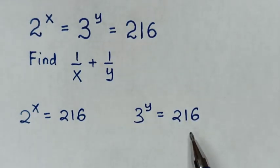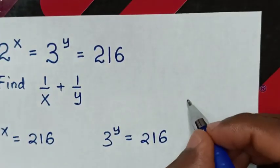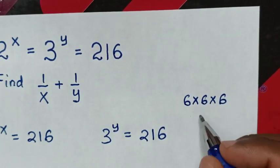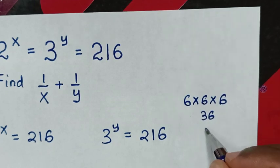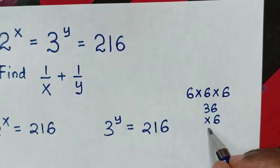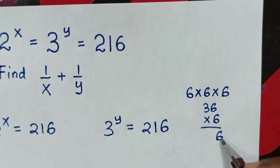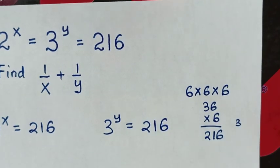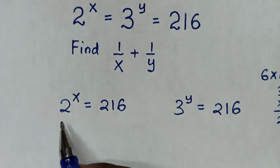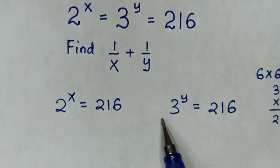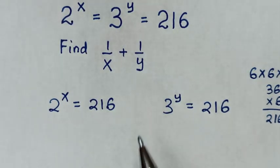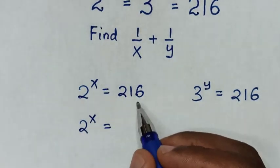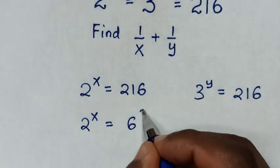216 is common, which is the same as 6 times 6 times 6. 6 times 6 is 36, and 36 times 6 is 216. So 216 equals 6 power of 3. From our equations, 2 power of x is equal to 6 power of 3, and 3 power of y is equal to 6 power of 3.